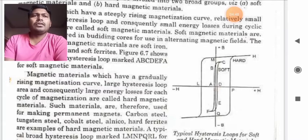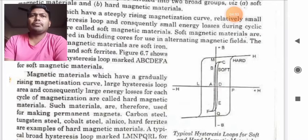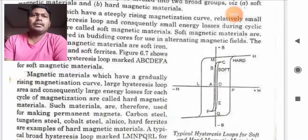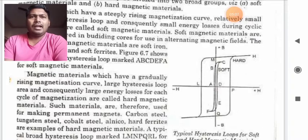This kind of materials will be found for your permanent magnet. We cannot make them temporary magnet because it will not retain magnetism for a longer period of time. So they are recommended for permanent magnets. Carbon steel, tungsten steel, cobalt steel, alnico, hard ferrites are example of hard magnetic materials.